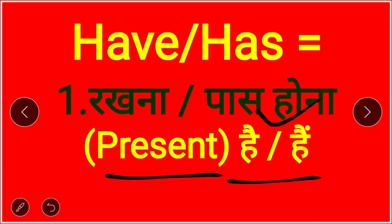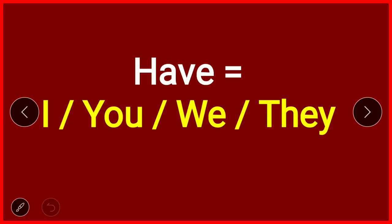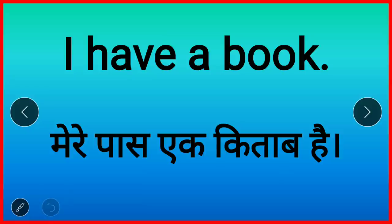How will you recognize it? The sentence will end in 'hai.' Now, have is used only with I, you, we, and they. I means main, you means tum or aap, we means hum or ham log, they means ve or ve log.